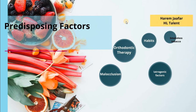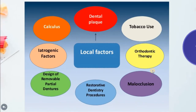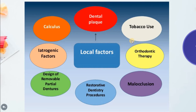Today we are talking about the iatrogenic factors that are contributing in aggravating the periodontal disease. We know that the main causative factor of periodontal disease is dental plaque or microbial biofilm. We have other aggravating factors associated with increasing or hastening the progress of the disease, including calculus, iatrogenic factors, designs of removable partial dentures, restorative dentistry procedures, malocclusion, orthodontic therapy, tobacco use, radiation therapy, and others.